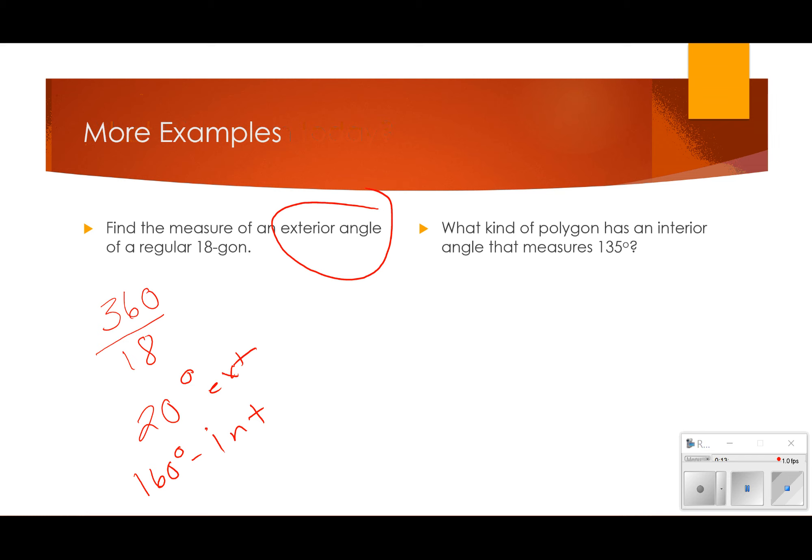Last example. What kind of polygon has an interior angle that measures 135 degrees? So, you could use the formula. 135 equals 180 times n minus 2 all over n. And you guys know how to solve that. I'm not going to go ahead and solve that for you. Because if you use your intuition, if I have an interior angle of 135 degrees, its corresponding exterior angle would be 45 degrees. So, why would I want to do that? Well, it's a lot easier to do 360 divided by 45 than it is to solve that several-step equation. 360 divided by 45 is 8. So, that would be an octagon.